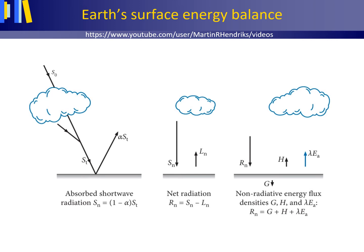Part of the radiation that reaches the Earth's surface is reflected. Alpha is the albedo or reflection coefficient. It's the fraction of incoming radiation that is reflected. Part of the incoming radiation is absorbed. Sn is the absorbed shortwave radiation at the Earth's surface.